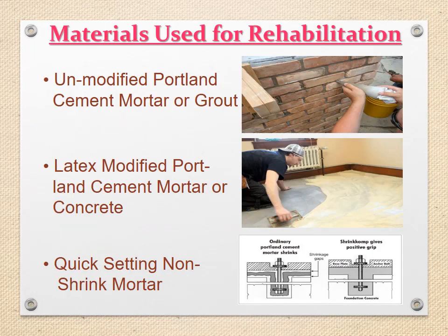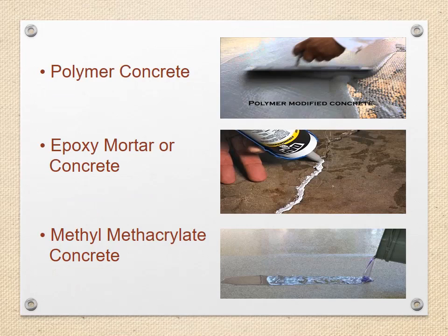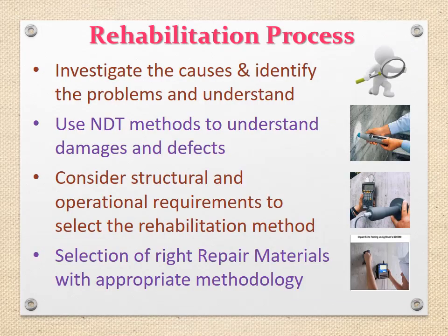Materials used for rehabilitation: 1. Unmodified Portland cement mortar or grout. 2. Latex modified Portland cement mortar or concrete. 3. Quick-setting non-shrink mortar. 4. Polymer concrete. 5. Epoxy mortar or concrete. 6. Methyl methacrylate concrete. Many more products are available in the market that can be used for the rehabilitation process.